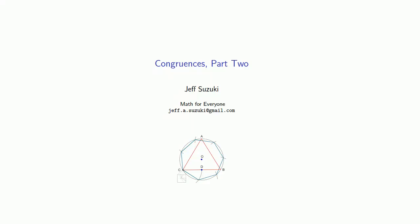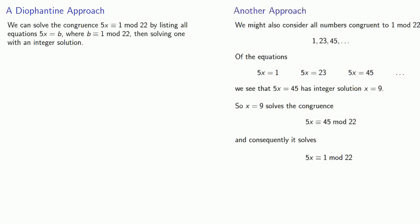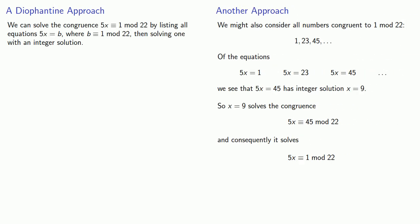So let's see if we can find a better way of solving linear congruences. Remember that earlier we solved the congruence 5x congruent to 1 mod 22 by listing all equations 5x equal to b, where b is congruent to 1 mod 22, and then solving one that had an integer solution.